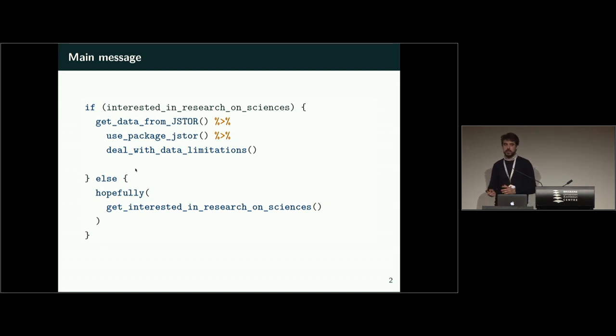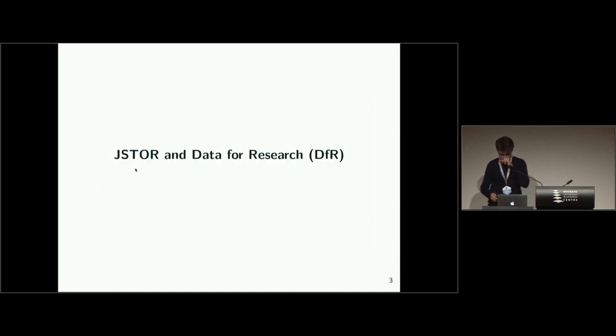If you're not yet interested in research on the sciences, hopefully you will be a bit more interested afterwards. So, what is JSTOR? It's an acronym for journal storage and it's basically a large archive for scientific texts. If you want to read a paper and your library has the license, you will probably find it there.